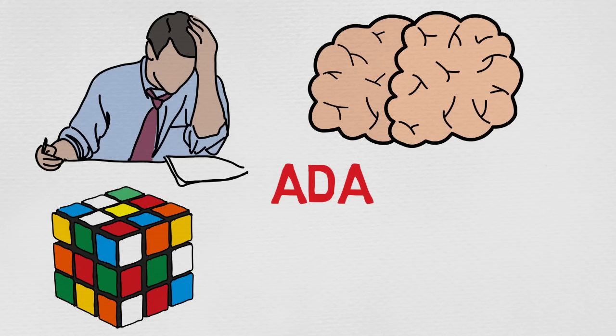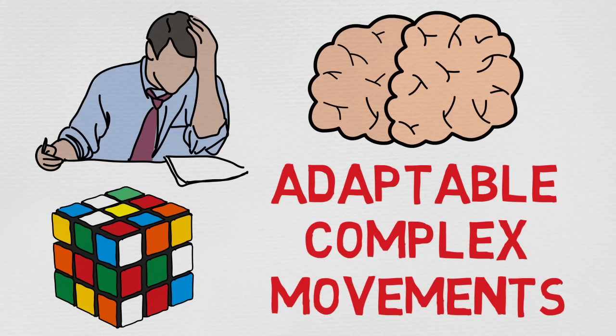And the reason is to perform adaptable, complex movements. Simply put, we have a brain made to move. As pointed out by neurophysiologist Rodolf Linus, only a mobile creature needs a brain.